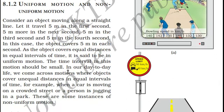This type of motion is called uniform motion. Generally we consider a time scale which is very low — for instance, in terms of 0.1 seconds.